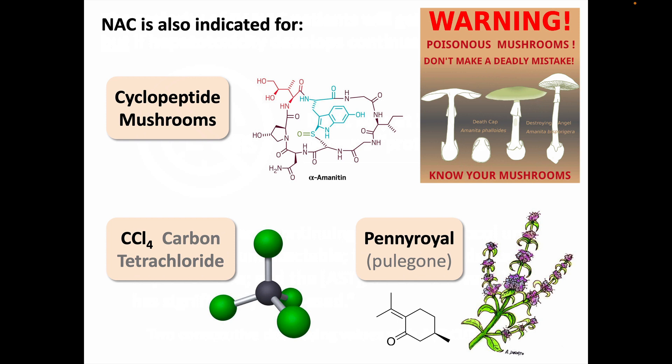Finally, N-acetylcysteine may also be indicated to treat or prevent hepatotoxicity from a few other agents, including cyclopeptide-containing mushrooms, carbon tetrachloride, and pennyroyal. Pennyroyal is an herb containing the molecule pulegone, which is converted in the liver into a toxic metabolite in a very similar manner to acetaminophen. Pennyroyal can be found in some natural flea treatments for dogs and cats, and it also has a reputation for inducing abortion — which it can do, but it can also damage the maternal liver in the process if not dosed precisely, and so pennyroyal may be misused by persons seeking alternative methods to terminate a pregnancy.